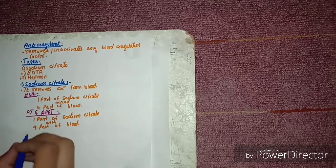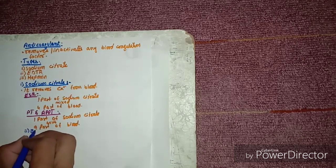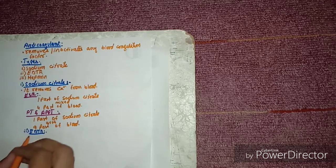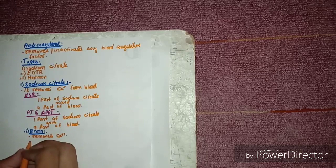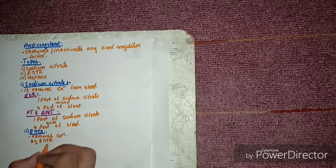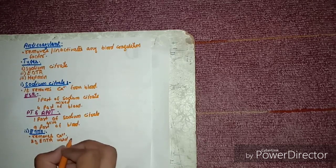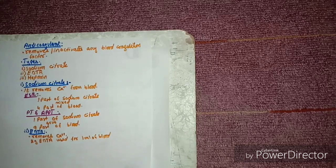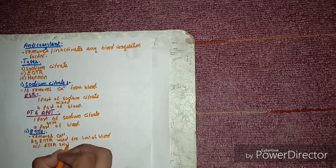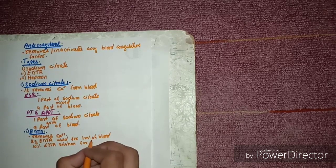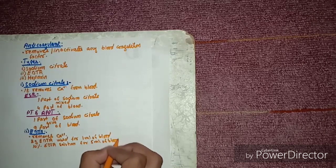Now we talk about EDTA. Just like sodium citrate, it also removes calcium ions from the blood. If we use powdered EDTA, then 2 mg of EDTA is used for 1 ml of blood. Alternatively, a 10% EDTA solution is required for 5 ml of blood.